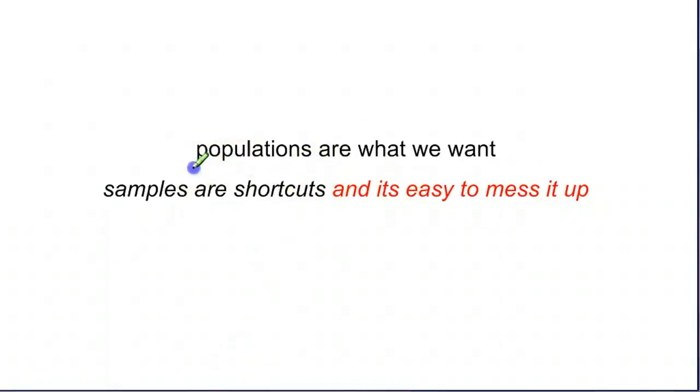So again, populations are really what we want. Samples are shortcuts. And the problem with samples is that it is easy to mess them up. They can be wrong. The good news is that there are ways to minimize how wrong they are, or to at least know how wrong they are, so we can state honestly what we found when we go out and do a survey. And we will look at all those different techniques in a little bit.